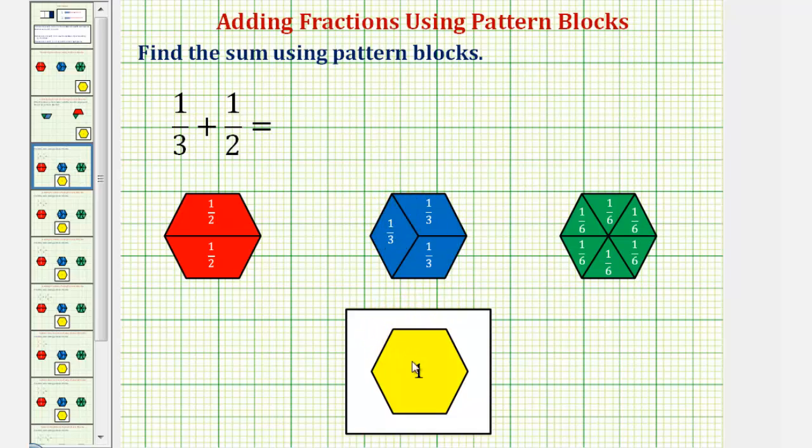And if we cut or denominate the whole into six equal partitions or six equal pieces, as we see here, each green pattern block or each green triangle is equal to one-sixth.